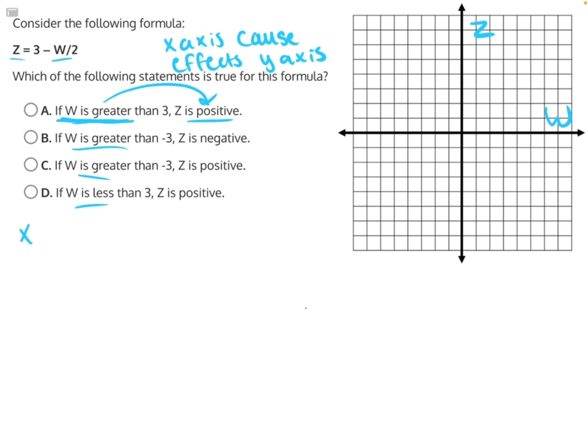And now we can find our x and y-intercepts, which will help us graph. Our x-intercept is when y equals 0, or in this case, when z equals 0. So let's rewrite our function to say 0 instead of z: 0 = 3 - w/2. Now we can add w/2 to both sides, opposite operations. These will cancel.